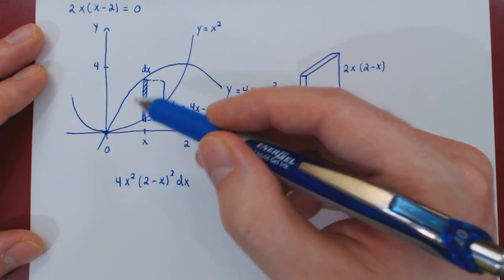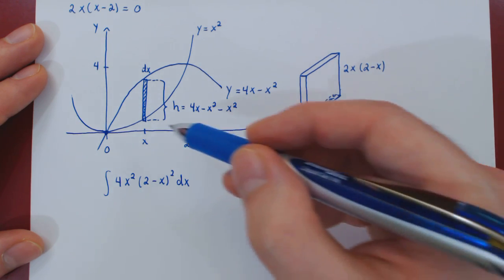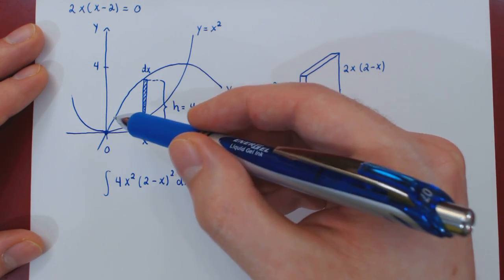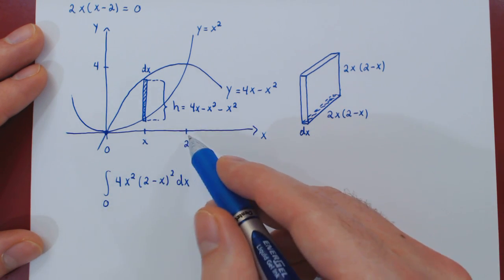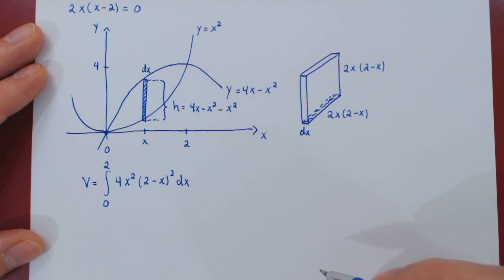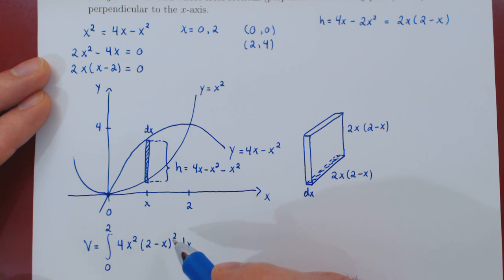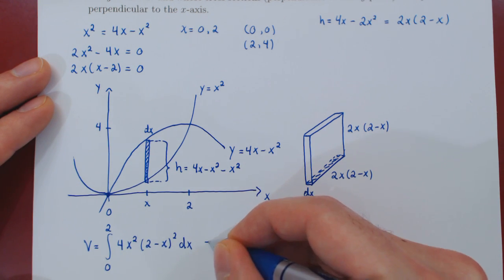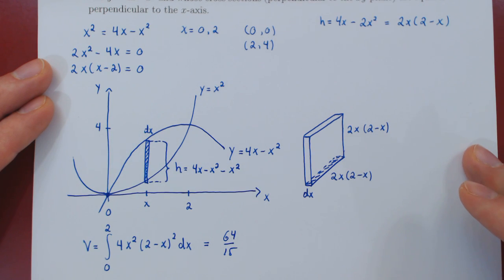To obtain the total volume of our solid, we have to sum the volume of all these little square cross sections from, well, where to where? The cross sections begin here, where x is equal to 0. And they go all the way up to here, where x is equal to 2. And this will return the total volume of our solid. And this is now a very easy integral to evaluate. Square 2 minus x, multiply by x squared, factor 4 out. Use the power rule, apply the fundamental theorem of calculus. And you will find quite simply that the volume is 64 over 15. And that's it.